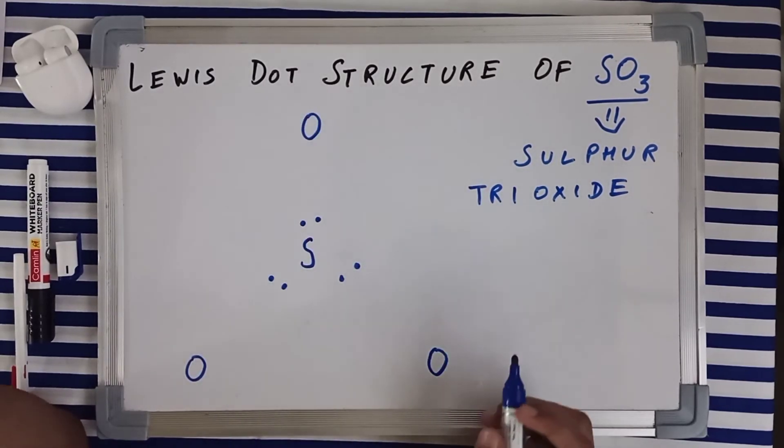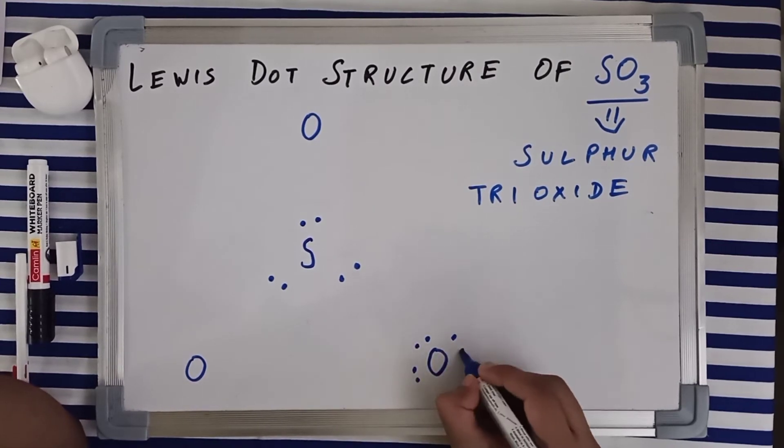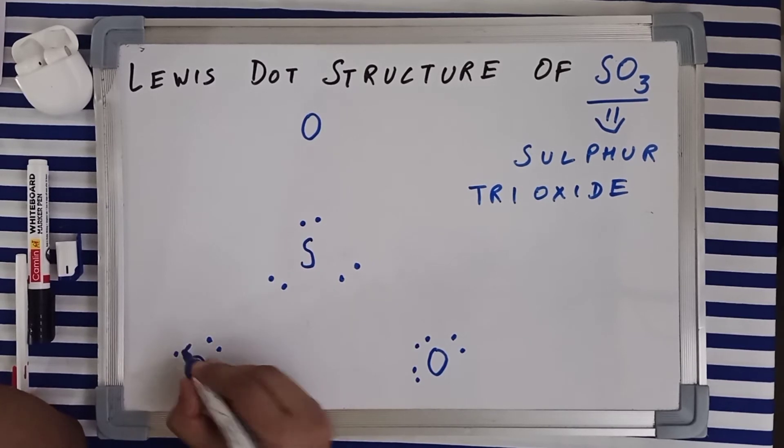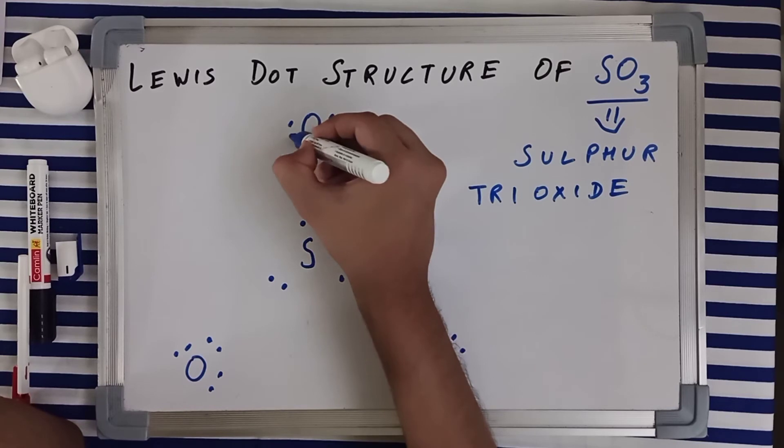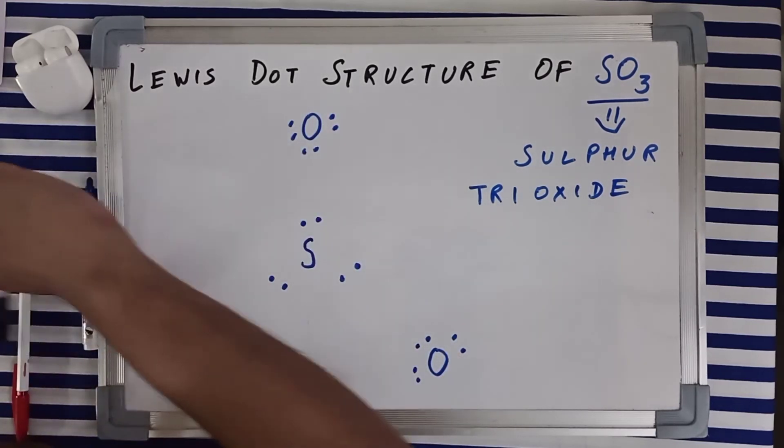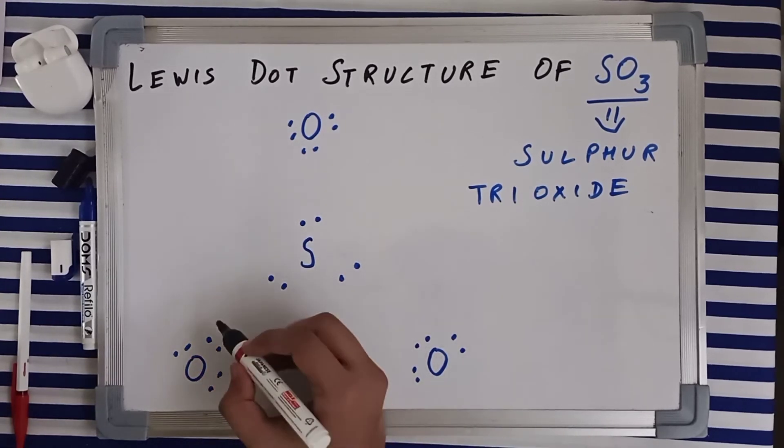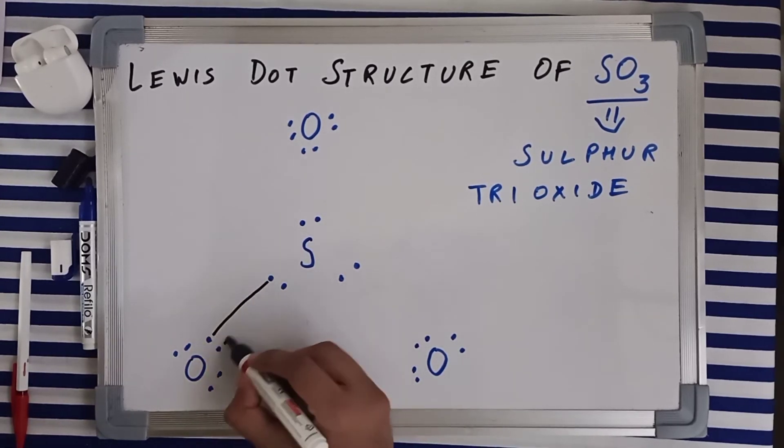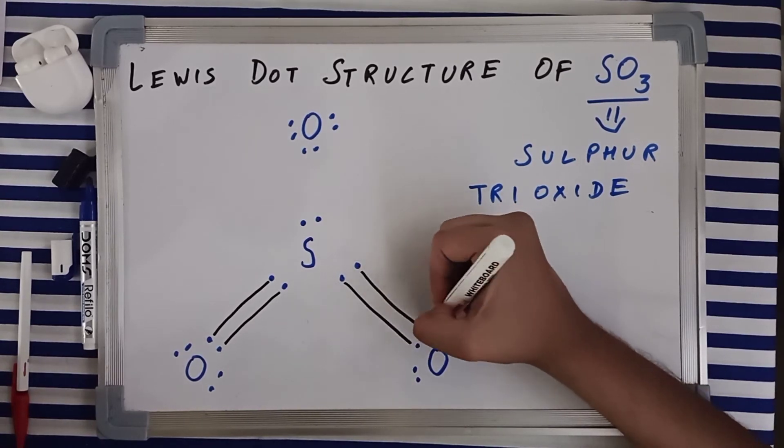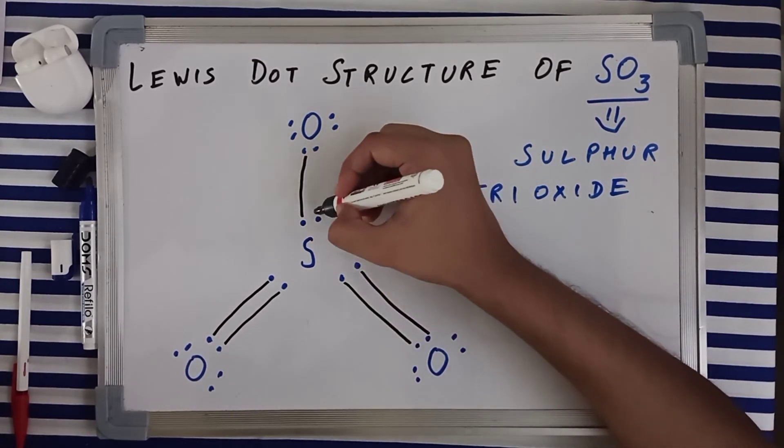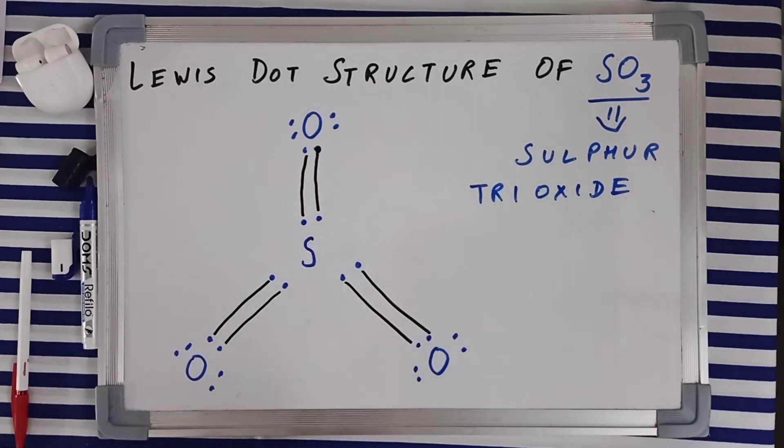Now oxygen also had six valence electrons. So one, two, three, four, five, six for each oxygen. Now oxygen, as I told, can make a maximum of two bonds, so each oxygen will make two bonds with sulfur and will complete its octet.